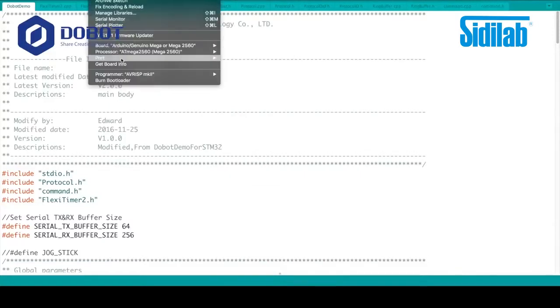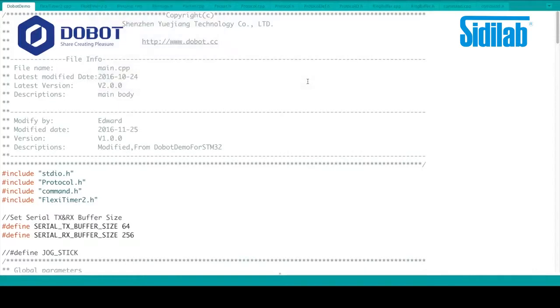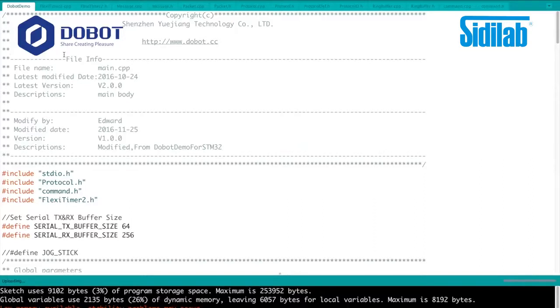Leave everything default. Go to Port and select the port where your Mega is connected. Then, upload. Alright. It's done uploading. I'll see you when we test it out.